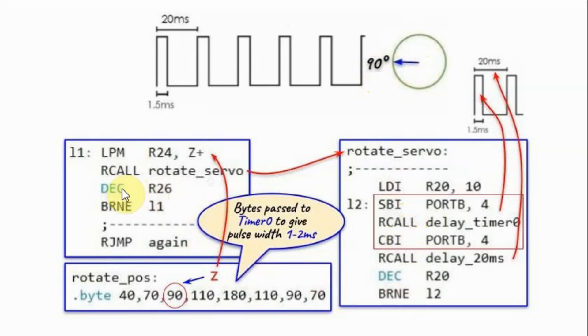And then we return to this calling subroutine, and then we go back and get the next byte and generate the next servo position, and so on.